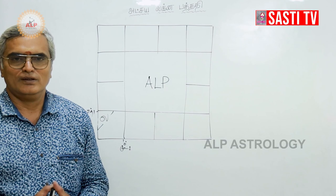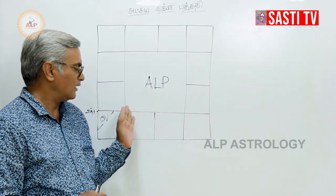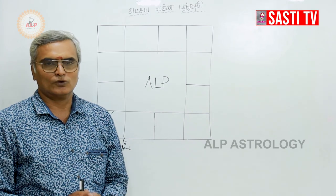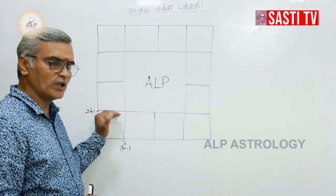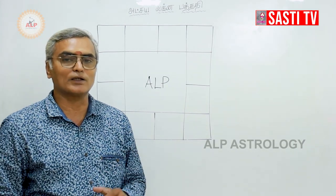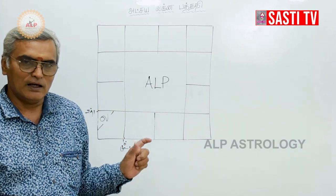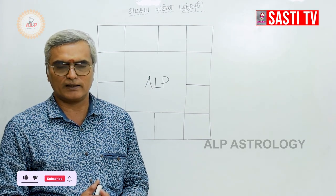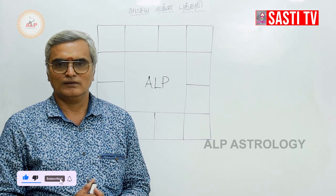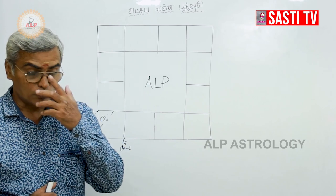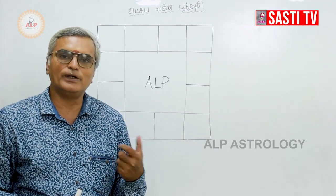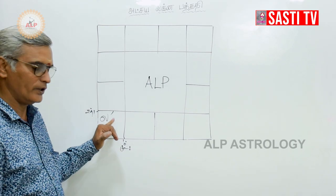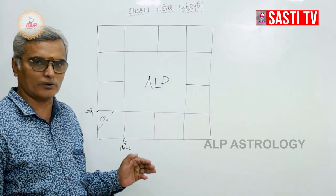There is a lagnam. If it's at a time, they will be able to make a lagnam. The lagnas are able to make a lagnam — this is not possible for everyone. If it's at a time, we can see the lagnam. Look at the lagnam.